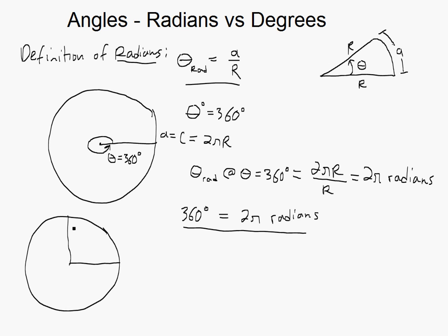Let's look at 90 degrees on the circle — this is 90 degrees — and you can see this is a quarter of that circle. So this angle is a quarter of 360 degrees, and in radians this would just be 2π radians divided by 4, because it's one-fourth of it, so we get π over 2 radians.